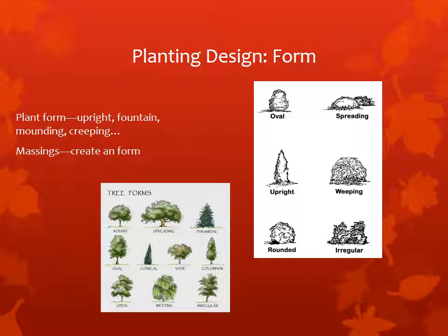Next, let's discuss form. Plants can come in a variety of forms: upright, fountain, creeping, mounding, and columnar. You can also use massings or groups of plants to create a form. Here are some examples of tree forms and shrub forms. Planting forms can be used to create emphasis; they can also be used to create simplicity or variety in a landscape.